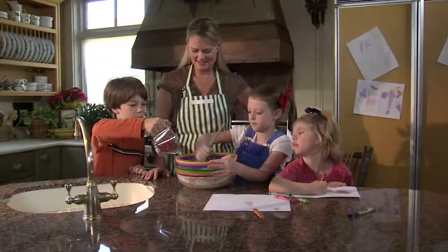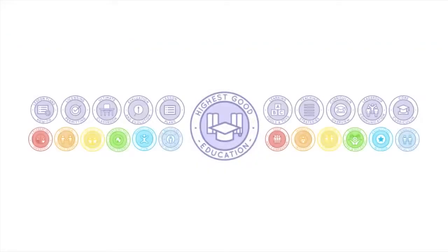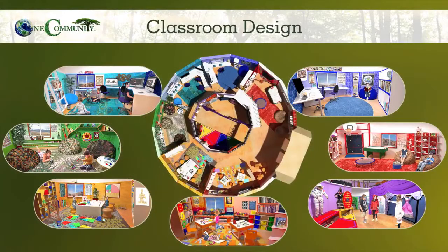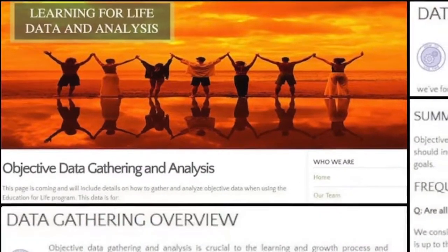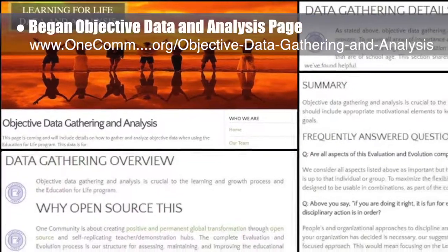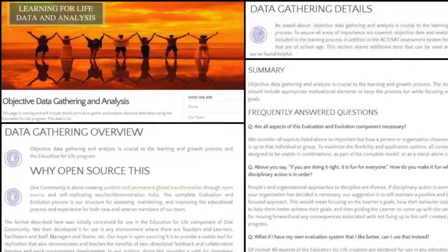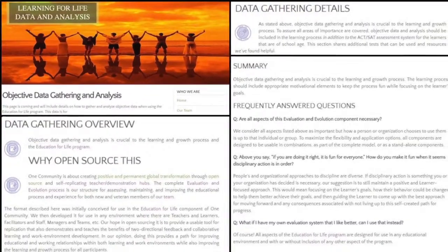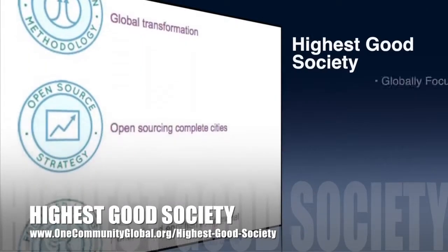One Community's approach to highest good education is designed for all age groups, adaptable to any schooling environment, inspiring and fun for all participants, and includes national standards, all subjects, lesson plans, teaching and learning strategies and tools, classroom design, and more. This week the core team continued adding to the education evaluation and evolution process open source pages and tutorials, creating the formatting and beginning to enter content for the objective data and analysis page, as you can see here.